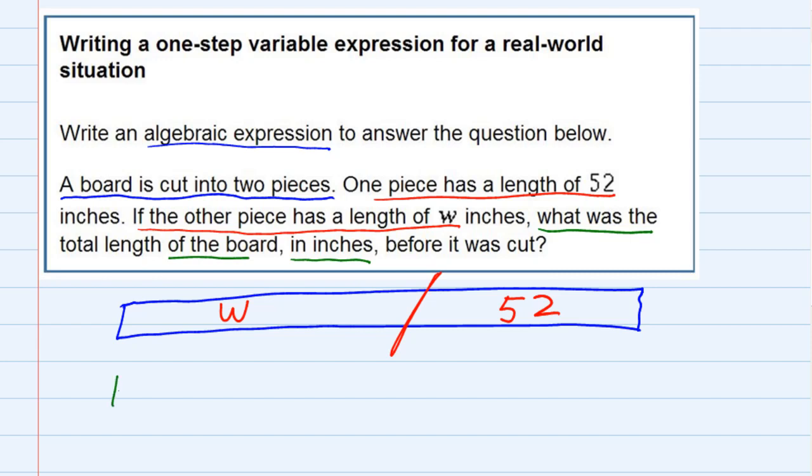So total length from one end to the other end would be just adding them up, right, the total. So W for the one piece on the left plus the 52 for the piece on the right. So our expression is W plus 52.